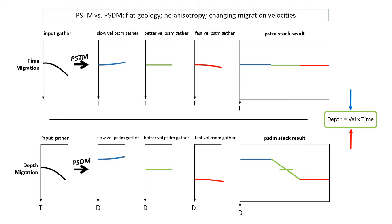As I get progressively closer and closer to the actual true depth, I get better. This is all because depth equals velocity times time. As velocity increases, the depth increases. So having a flat gather in depth migration is great, but it does not guarantee that we have the right velocity model — it's at least one hint that we might be getting close to the right velocity model.